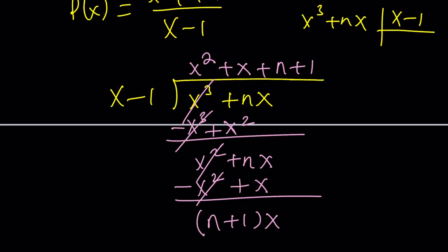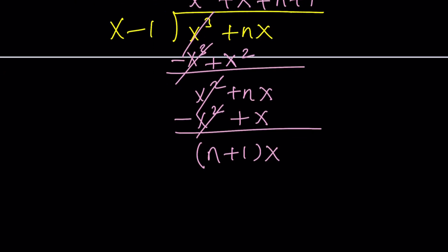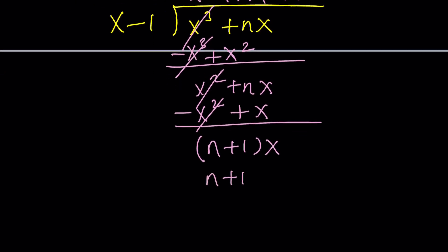Now we're going to go ahead and distribute n plus 1. It's going to give us n plus 1 times x minus n plus 1. I put it in parentheses because we're going to negate and add. So in other words, we're subtracting. And at the end, we get n plus 1. Nice.